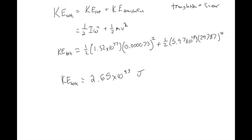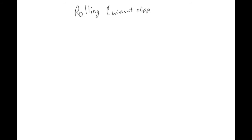So this was an example where the spin of the object is not necessarily related to how it's moving. Now we're going to look at the situation where the spin of the object directly relates to its linear motion — and that is called rolling. Specifically in this class, we'll look at rolling without slipping.